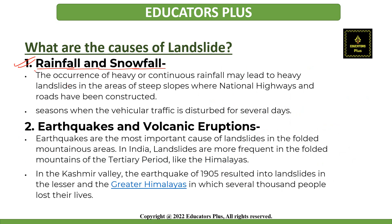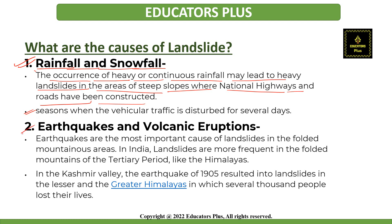Now let's discuss the causes of landslides. The major causes of landslides are as follows. The first is rainfall and snowfall. When there is occurrence of heavy or continuous rainfall, it may lead to heavy landslides in areas of steep slopes where national highways and roads have been constructed. Apart from that, the next cause is earthquakes and volcanic eruptions.